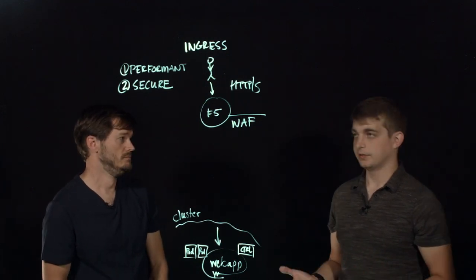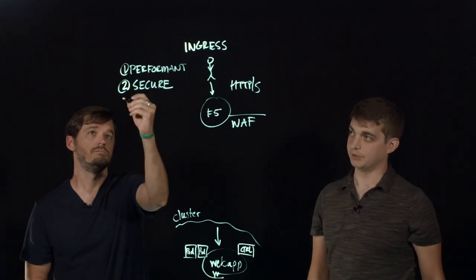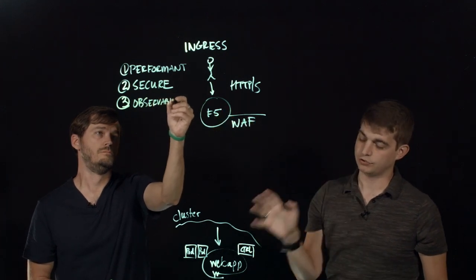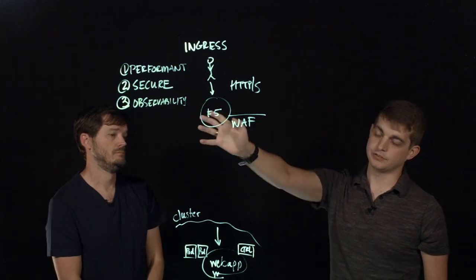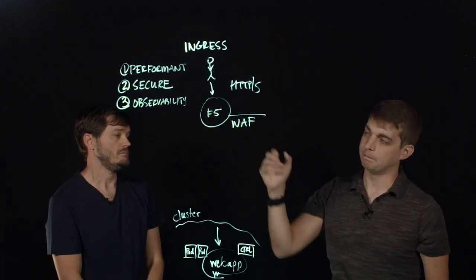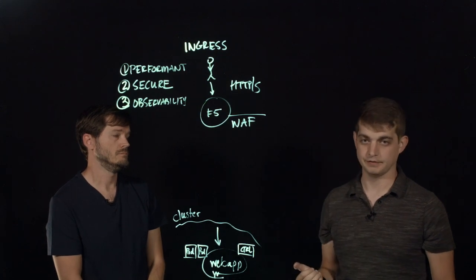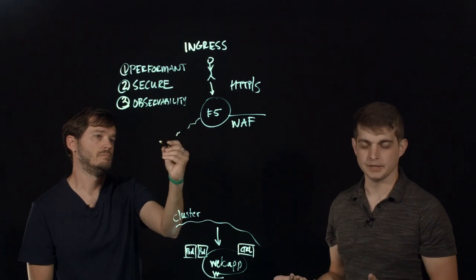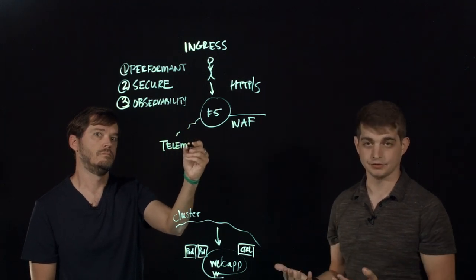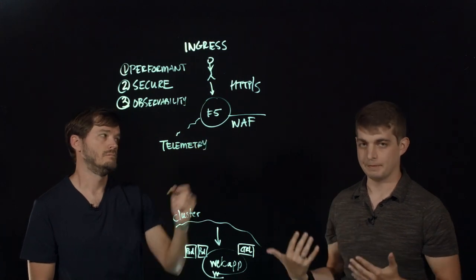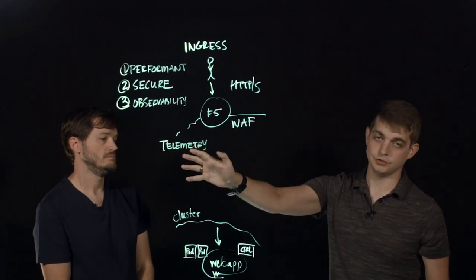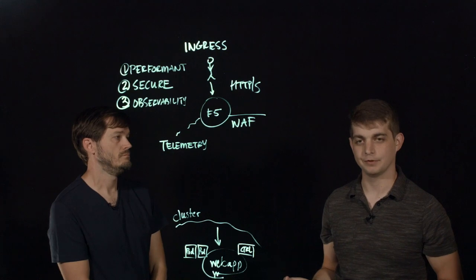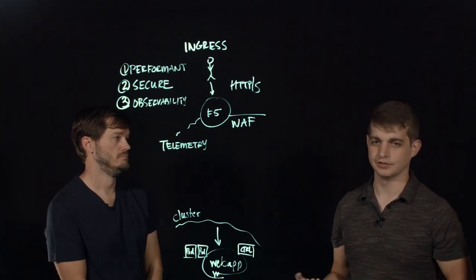And I guess the final thing that we can touch on is really observability and visibility around these applications and the traffic that's coming through our F5 device to our web applications. So F5 has a solution known as telemetry streaming that is able to monitor that traffic as it passes through the F5 device and pass information such as the number of known exploits that are being blocked, the amount of traffic that's passing through the F5 device, the amount of CPU usage on that F5, and offload that to a telemetry device such as a Grafana, for example. And that can be used to dashboard out that information and be consumed in a way that's easy to understand.